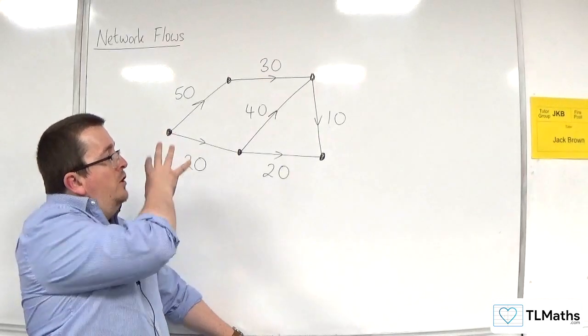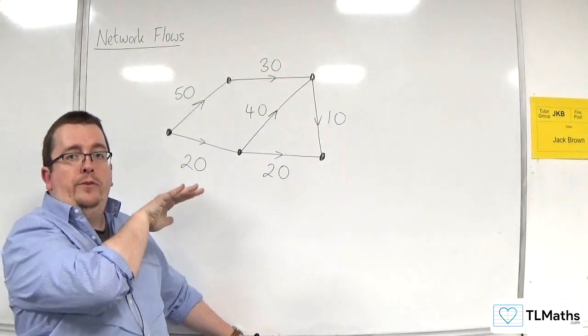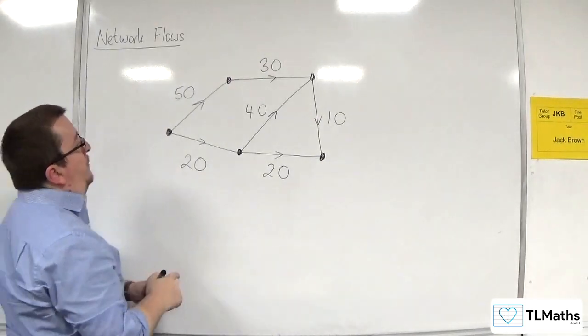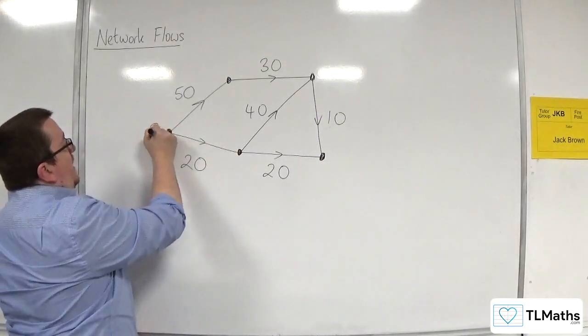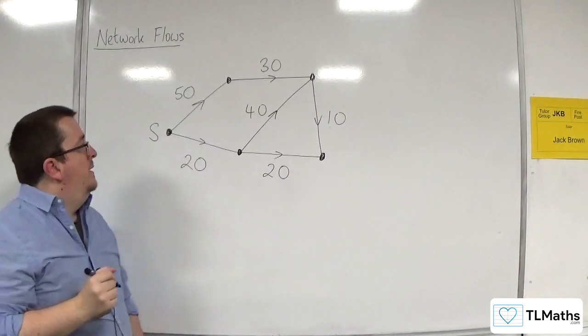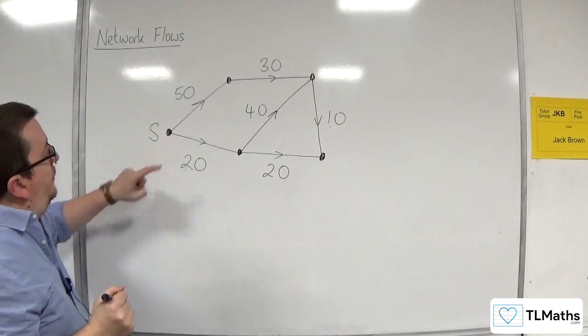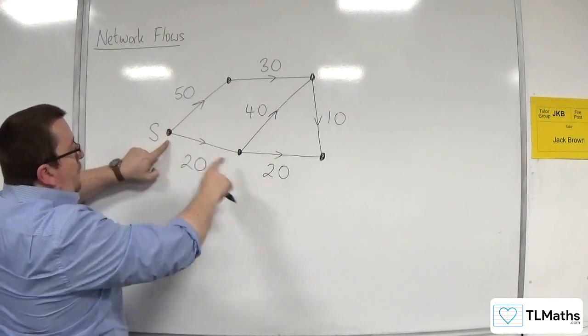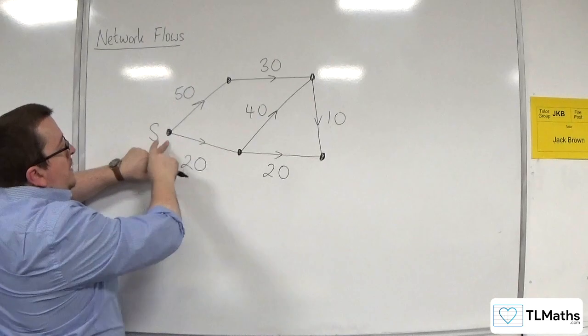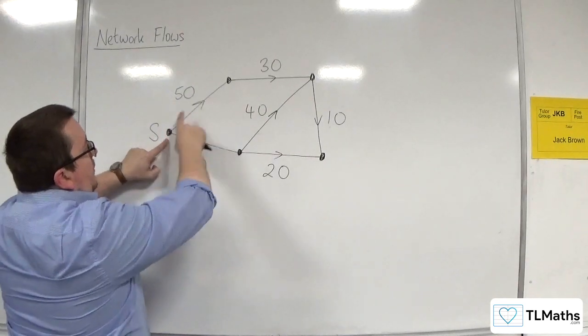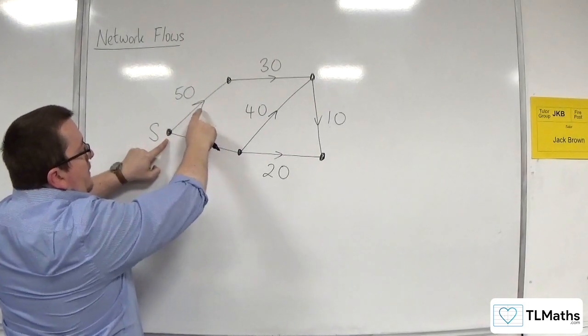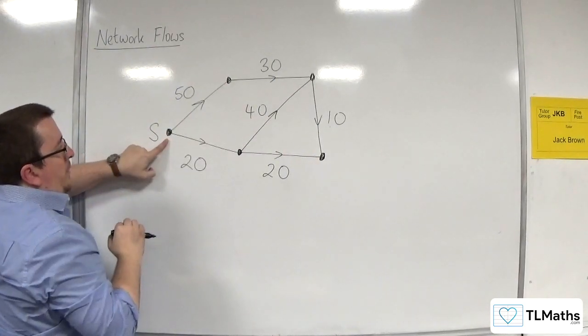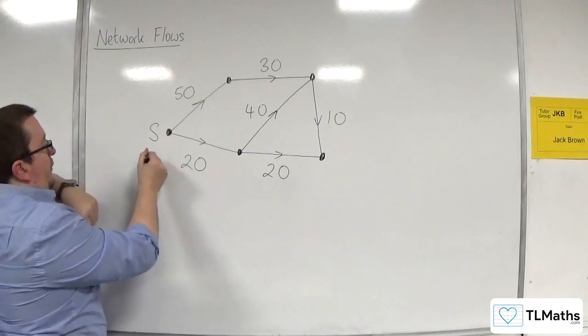Now, there are two special nodes in this network. The first one is the source. And the source is usually labelled with an S. Now, this is called the source because this is where the edges are coming out of that node. So if you have edges and they're directed edges, as you can see, if the arrows are coming out of that source, of that node, then we refer to it as the source.